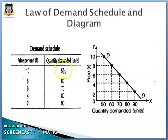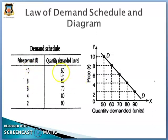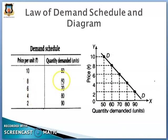As the price is 10 rupees per unit, the quantity demanded is 50 units. As the price falls from 10 rupees to 8 rupees, demand increases from 50 units to 60 units. Further, as price again falls from 8 rupees to 6 rupees, quantity demanded increases from 60 to 70 units.